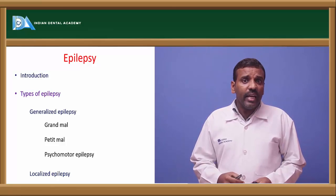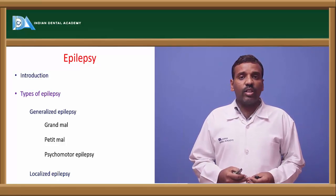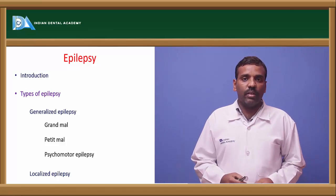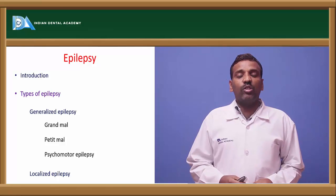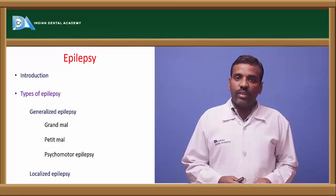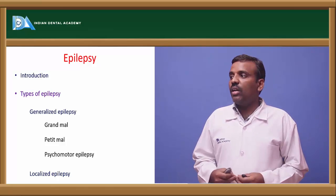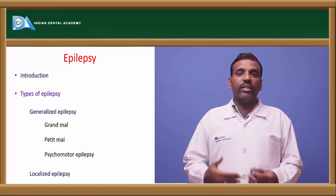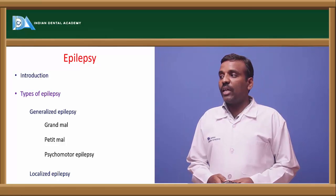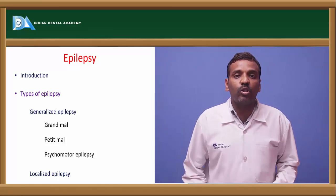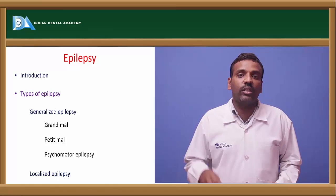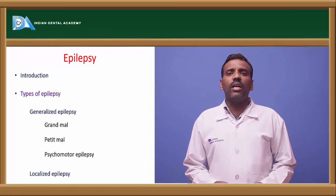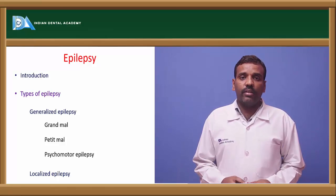Generalized epilepsy is further divided into three types: grand mal, petit mal, and psychomotor epilepsy. Grand mal involves twitching, closure of eyes, tongue twitching, and teeth clenching. Petit mal is the condition where the patient already knows they are about to get convulsions. Psychomotor epilepsy occurs when psychic or emotional reactions trigger seizures. Localized epilepsy affects only one part of the body.